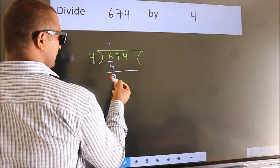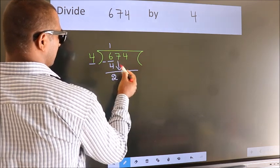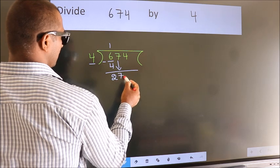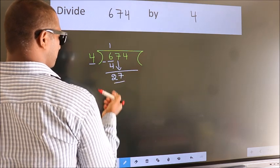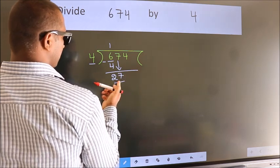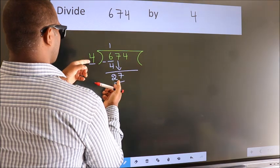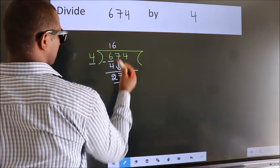After this, bring down the beside number. So 7 down, making 27. A number close to 27 in the 4 table is 4×6=24.